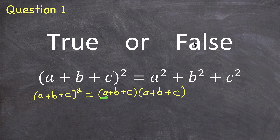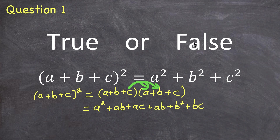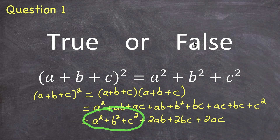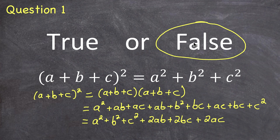I could expand this by multiplying all three terms in the first factor by all three terms in the second factor — distributing A, then B, then C to each term. Collecting all the like terms, it simplifies to A² plus B² plus C² plus three other terms. So the left side and the right side are not equal to each other. The answer to this question is false.